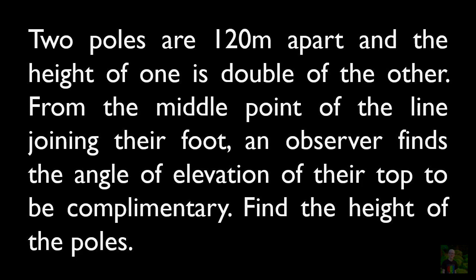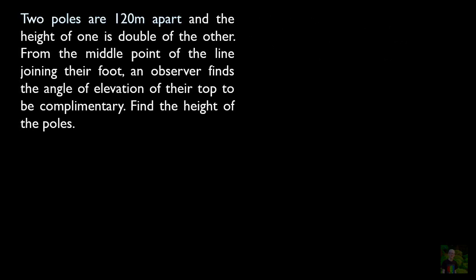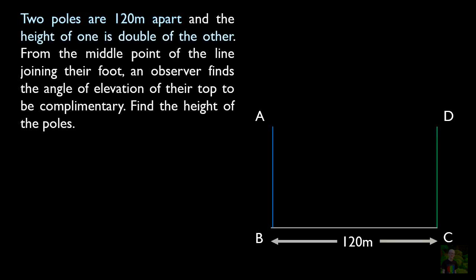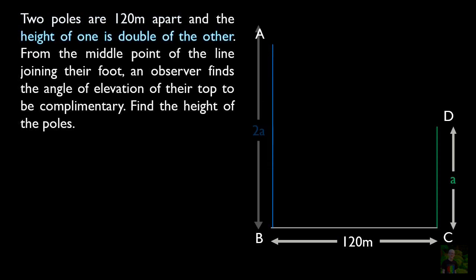The third question says: two poles are 120 meters apart, and the height of one is double the other. From the midpoint of the line joining their feet, an observer finds the angles of elevation of their tops to be complementary. Find the heights of the poles. The two poles are AB and CD. If the height of CD is A, then the height of AB is 2A, so AB is twice CD.